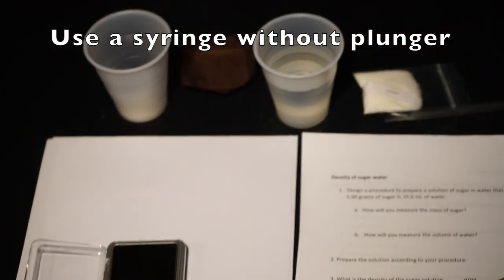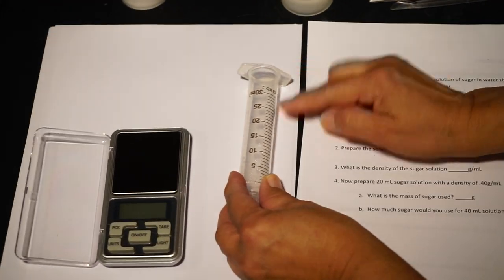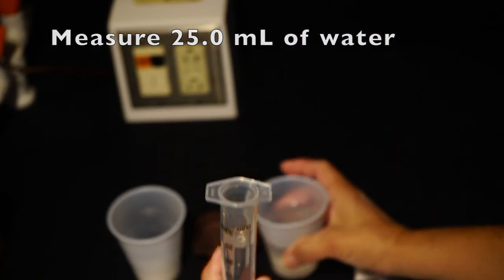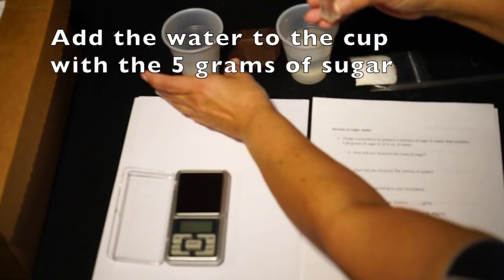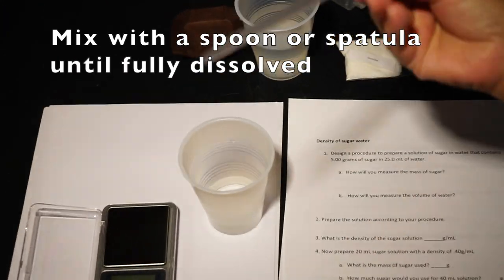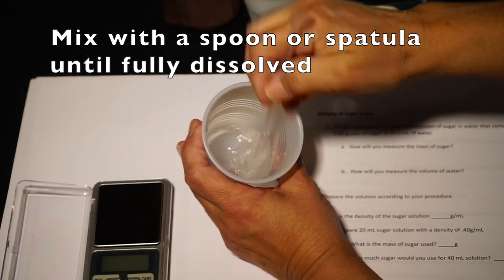To measure the water, you can use a syringe without plunger. Remember to read the graduation properly. Add the water to the cup with sugar, and using your spoon, you can mix and dissolve the sugar.